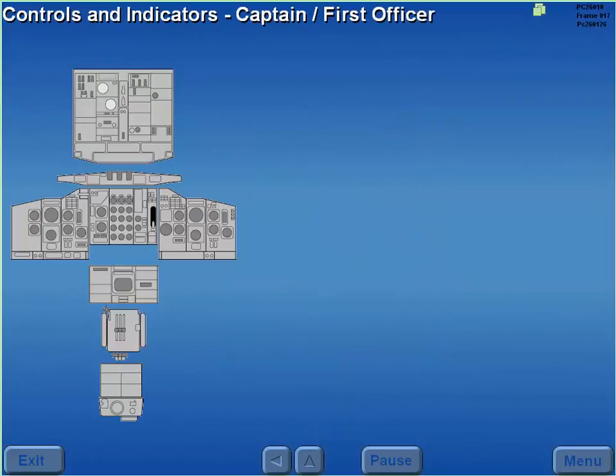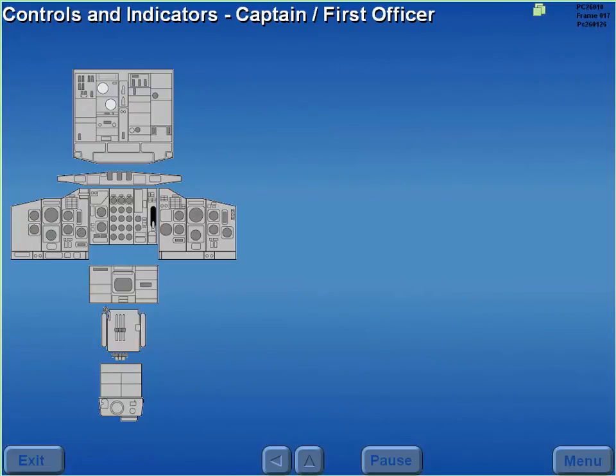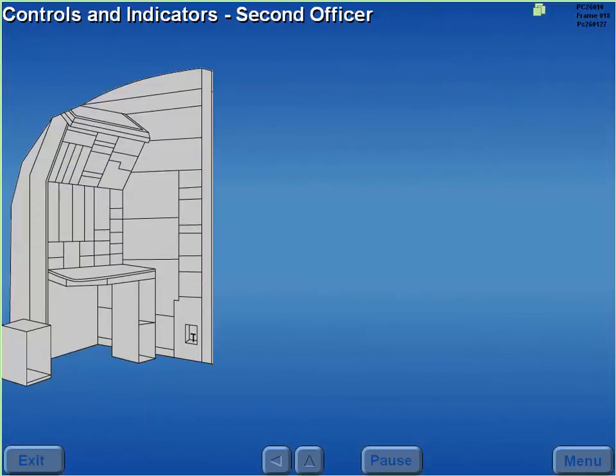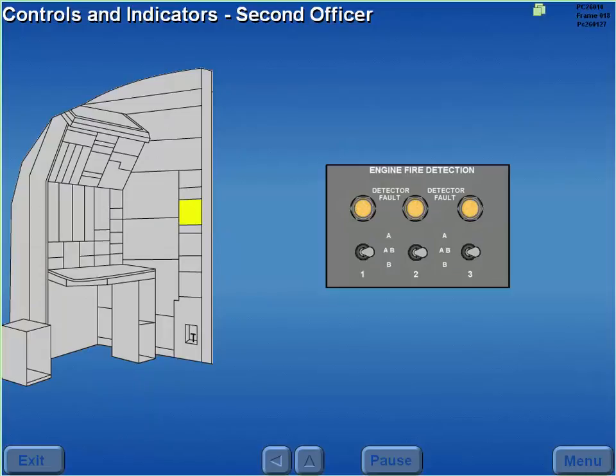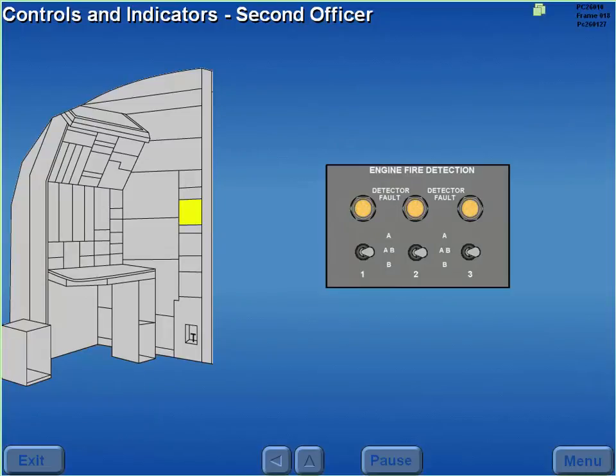The controls and indicators for engine fire detection and protection are located on the pilot's glare shield. Additional controls and indicators are located on the second officer's auxiliary panel.